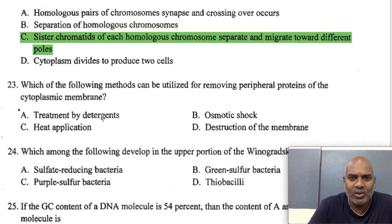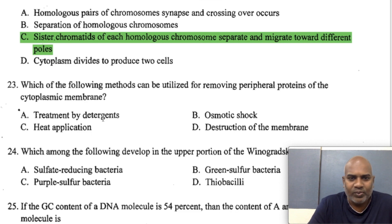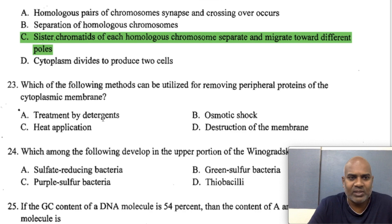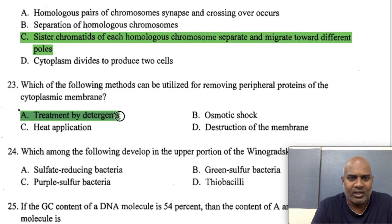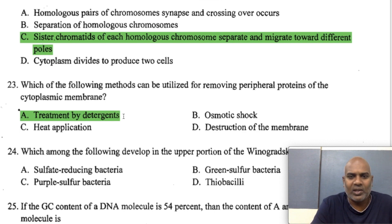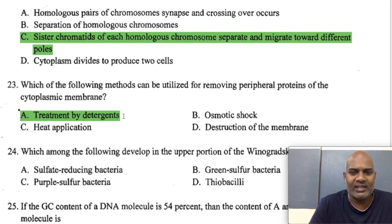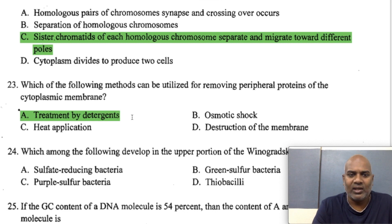Which method can be utilized for removing peripheral proteins of the cytoplasmic membrane? To remove peripheral proteins we treat with detergents such as sodium dodecyl sulfate (SDS) or Triton X-20 and Triton X-100. These chemicals act as detergents and are involved in the removal of peripheral proteins.